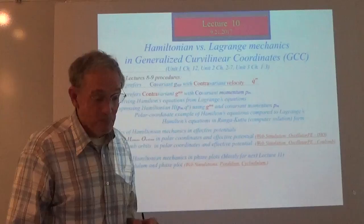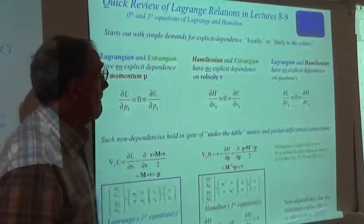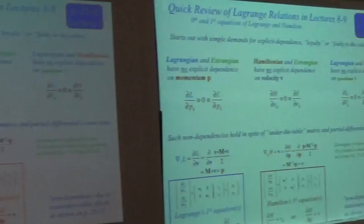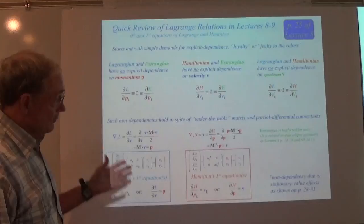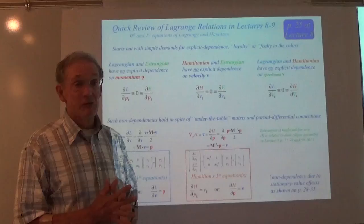Just to remind you that the Hamiltonian is the thing that's going to be a function of momentum, but not of velocity. Look at the second slide here on this screen. This is from page 25 of Lecture 8 where we were doing the geometry that gave us the first Lagrange equation.